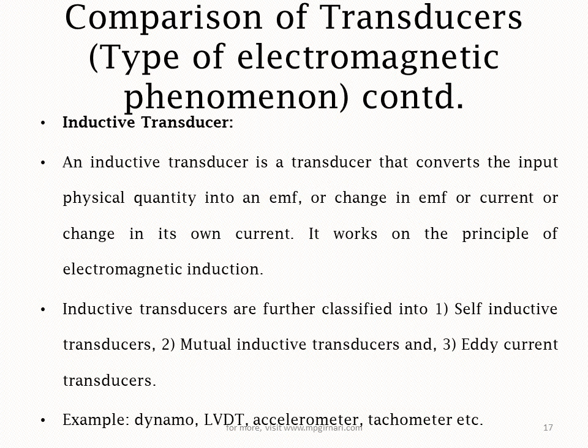Next is inductive transducer. Inductive transducer kya hota hai — woh electromagnetic induction ka related jo quantity hai woh output mein aata hai. Principal: electromagnetic induction. Definition: an inductive transducer is a transducer that converts the input physical quantity into EMF or change in EMF, or current or change in its own current, working on the principle of Faraday's law of electromagnetic induction. It is very important when writing about inductive transducer ki uska jo bhi working principle hai woh electromagnetic induction ki aadhar pe kaam karta hai. Inductive transducer further classified hai — self-inductive, mutual inductive, and eddy current transducer. Dynamo — self induction pe kaam karta hai. LVDT — mutual induction pe kaam karta hai. Tachometer is based on eddy current.